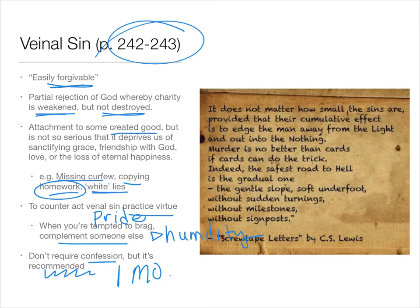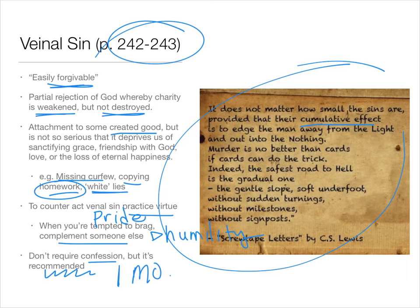I found this quote from C.S. Lewis in the Screwtape Letters. It talks about how sometimes small sins, even though we don't think they're a big deal, have a cumulative effect. He writes: 'It does not matter how small the sins are, provided that their cumulative effect is to edge the man away from the light and out into the nothing. Murder is no better than cards, if cards can do the trick. Indeed, the safest road to hell is the gradual one — the gentle slope, the soft underfoot, without sudden turnings, without milestones, without signposts.' As Catholics, we believe there's a difference between murdering someone and gambling, but we don't want to lull ourselves into a false sense of security and think we don't really sin that much, letting it become a cumulative thing.